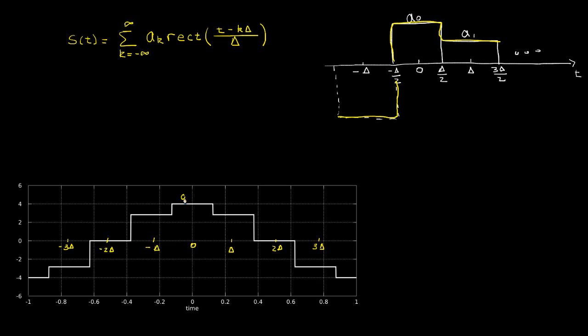This value here, a 0, looking on this axis, that's equal to 4. a 1 appears to be equal to roughly 3, a 2 is equal to 0, a 3, that's roughly negative 3, and so forth. Likewise, this happens to be symmetric.